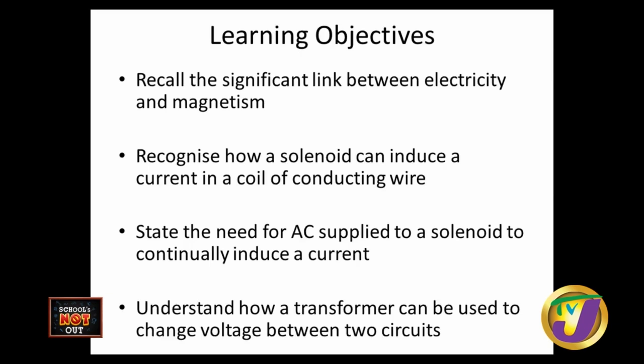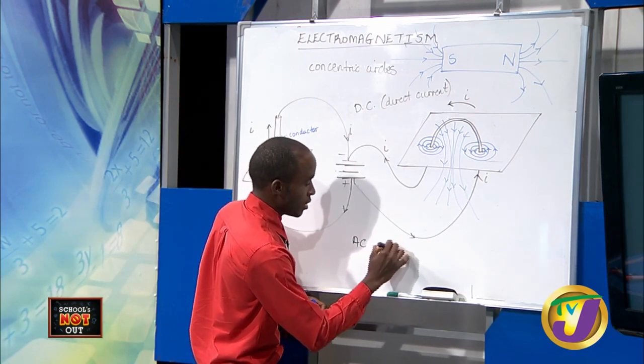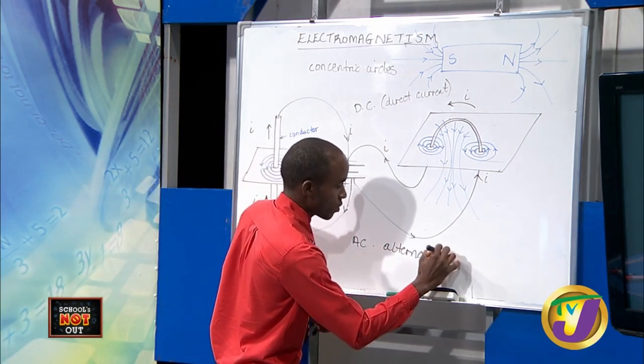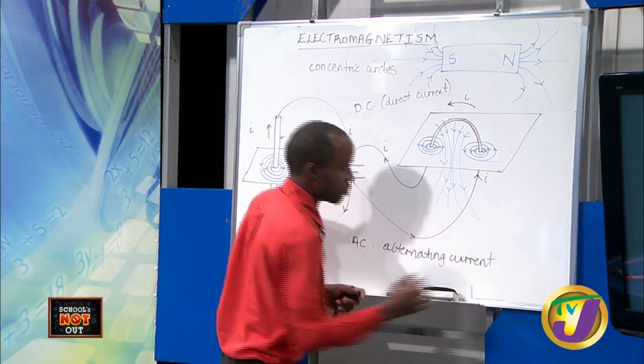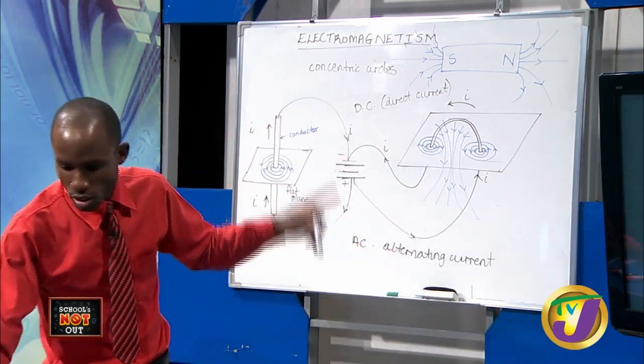We're going to look at how this applies to actual coils of wire. A solenoid is simply that bunch of wires seen earlier. To recall: magnetism generates electricity, and electricity has an associated magnetism. Recognize how a solenoid can induce a current in a coil of wire. We also look at AC — alternating current — as opposed to DC. DC is one way and steady; AC is constantly changing, alternating both ways.